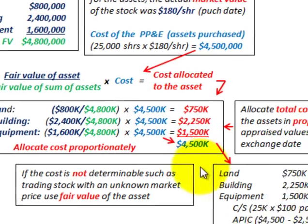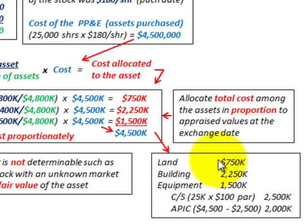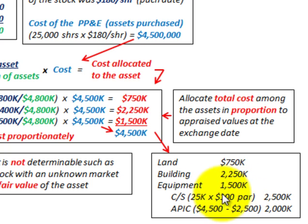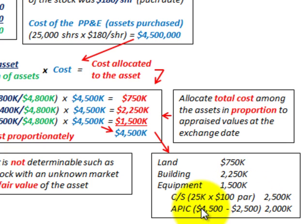For the journal entries: land is debited $750,000, building $2,250,000, and equipment $1,500,000. Because we used common stock as the exchange, we record the par amount at $2,500,000 — that's 25,000 shares times $100 par. The additional paid-in capital is $2,000,000, which is simply the difference between the total asset cost of $4,500,000 and the par amount of $2,500,000.